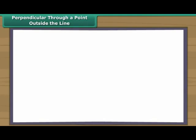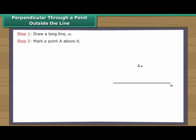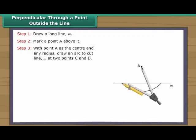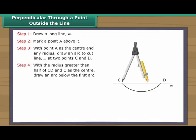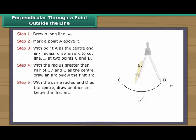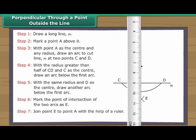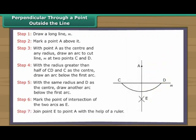Perpendicular through a point outside the line. Draw a long line M and mark a point A above it. With point A as the centre and any radius, draw an arc to cut line M at two points C and D. With a radius greater than half of CD and C as the centre, draw an arc below the first arc. With the same radius and D as the centre, draw another arc below the first arc. Mark the point of intersection of the two arcs as E. Join point E to point A with the help of a ruler. AE is perpendicular to line M.